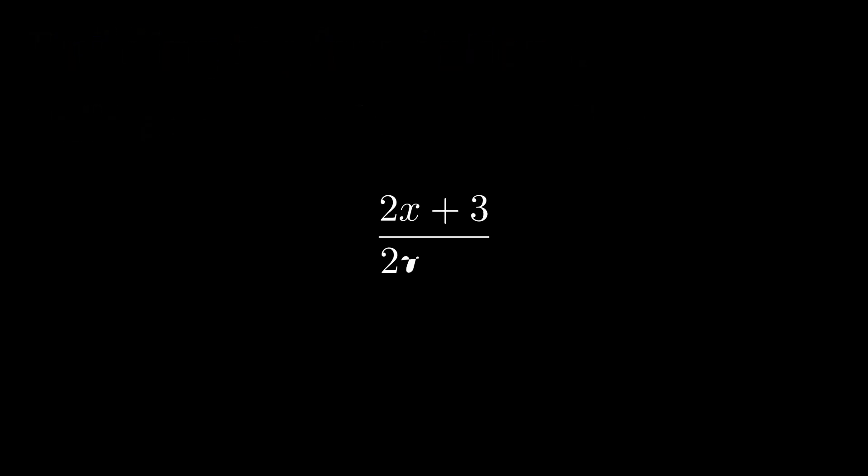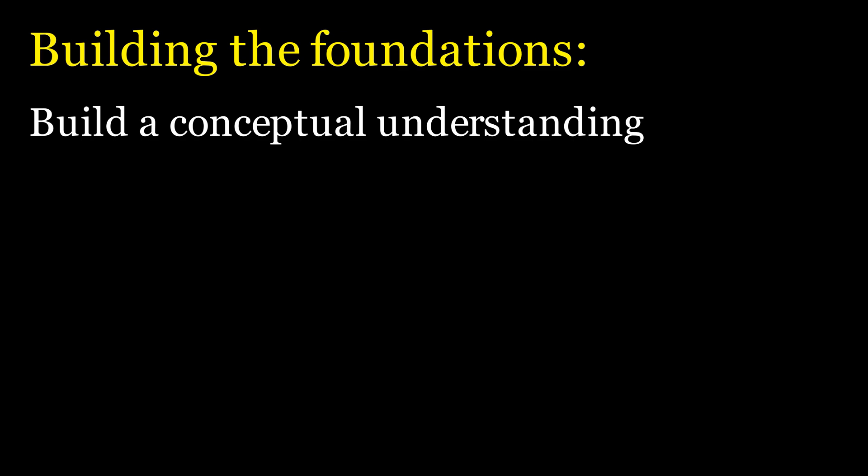For example, say you have some fractions 2x plus 3 over 2y plus 3. A common misconception is that you can simplify these fractions, maybe cancelling the plus threes or the factor of 2 in front of the variables. The reason people make these assumptions is because they were taught they can cancel factors, but they don't actually know why they can cancel things. So how do we build this foundation in the best possible way?